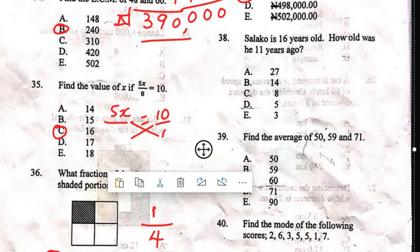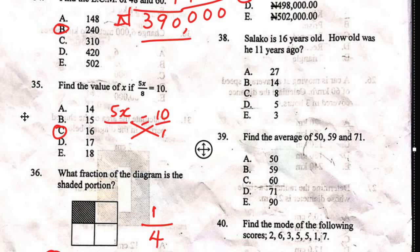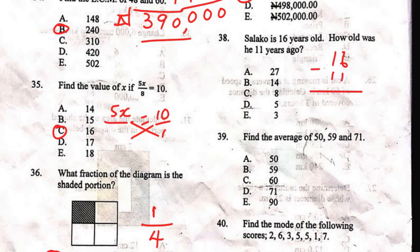Question 38: Salako is 16 years old. How old was he 11 years ago? That's 16 minus 11, which is 5. The right answer is D.